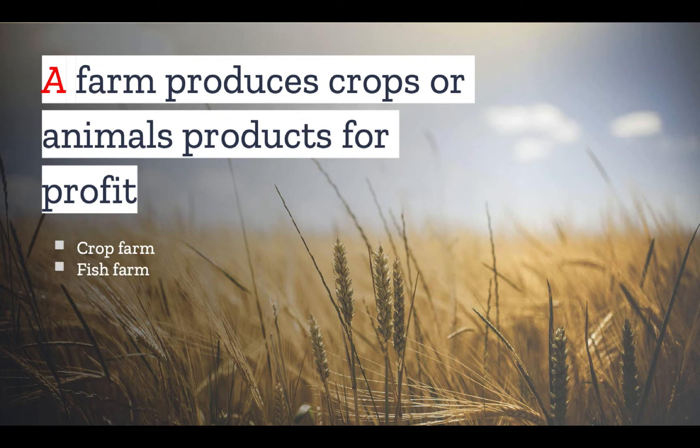Fish farms are another kind of farm that is growing in popularity. These are the farms that raise a lot of the fish, such as tilapia, that we consume on a day-to-day basis. Dairy farms are another common kind of farm you'll see when driving across the country, and they range from the traditional dairy cow farm designed primarily to produce milk to farms that create specialty milk or cheese products using goat or sheep milk.